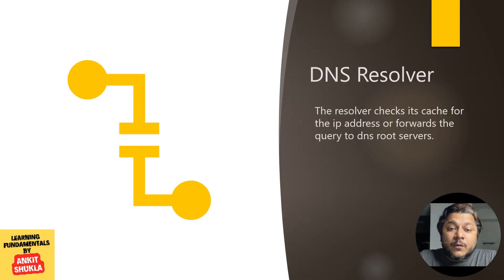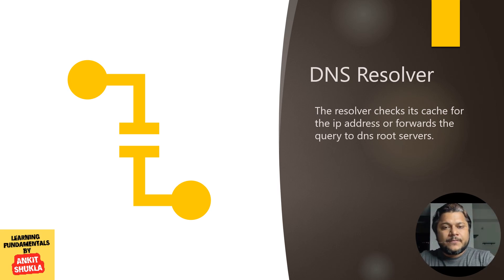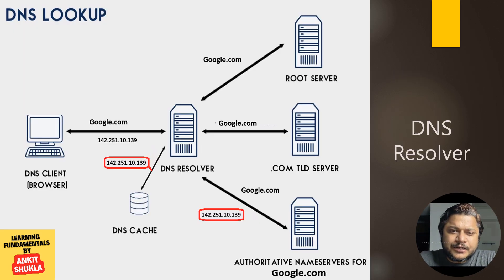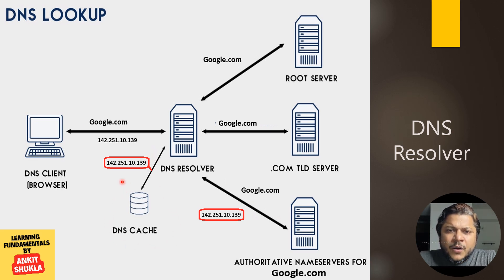The DNS resolver checks its cache for the IP address, or forwards the query to a DNS root server. In this diagram, the DNS client opens google.com, which reaches its DNS resolver. The DNS resolver can reply back with a cached entry for that website, or it can forward the query to the root DNS server.